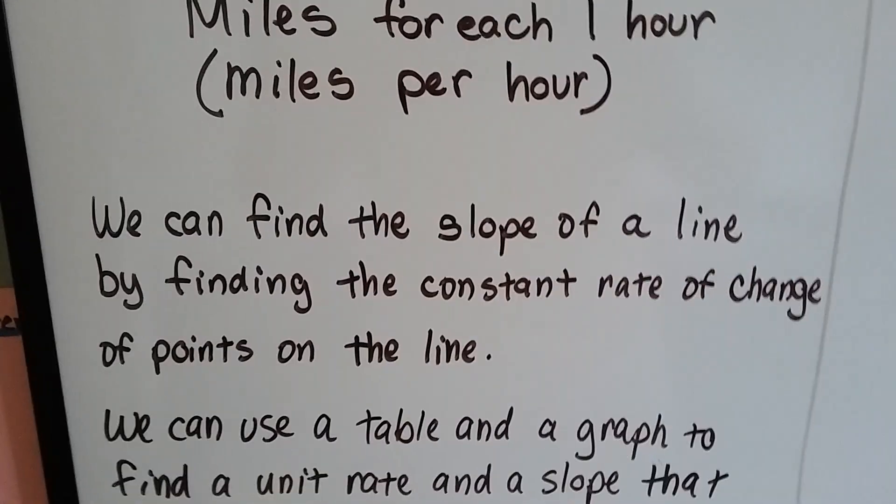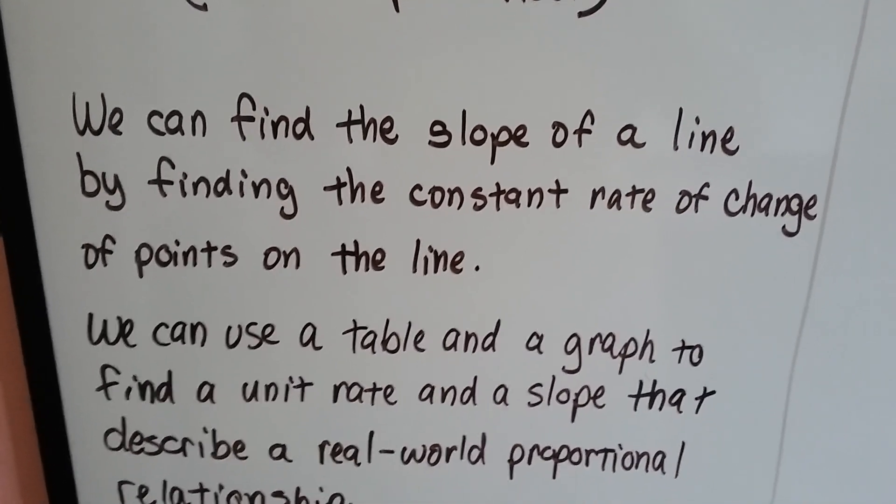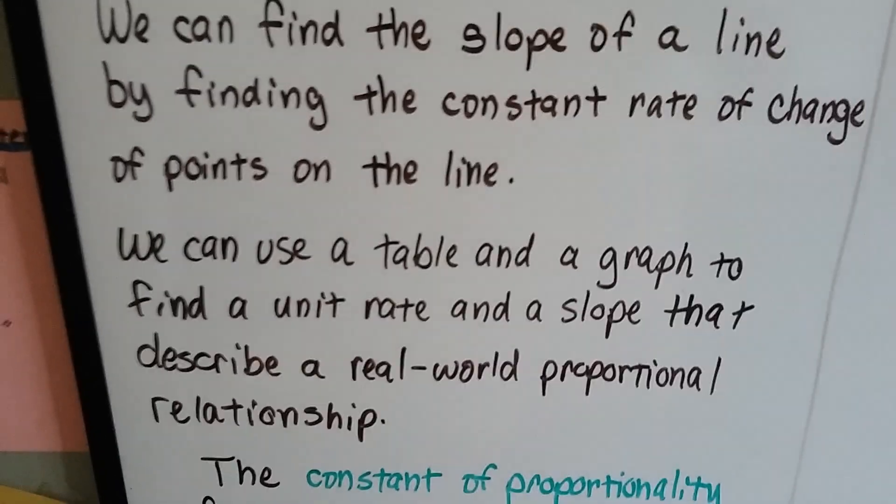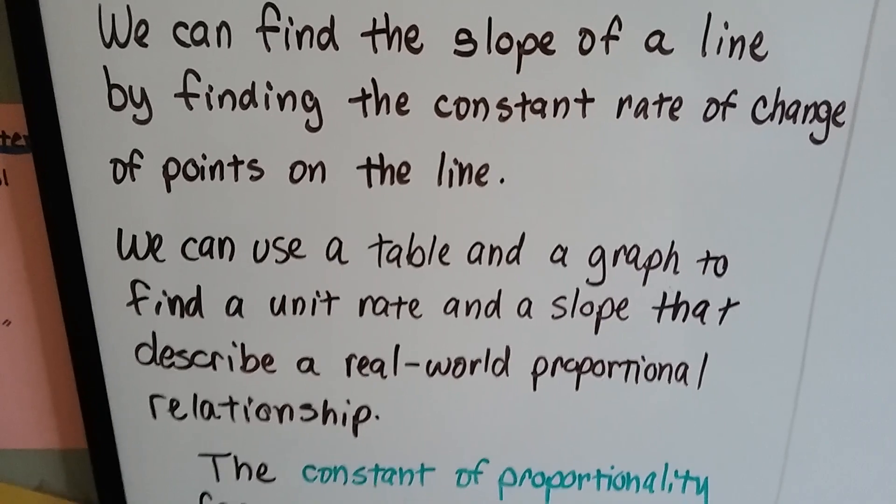We can find the slope of a line by finding the constant rate of change of points on a line. We can use a table and a graph to find a unit rate and a slope that describes a real-world proportional relationship.